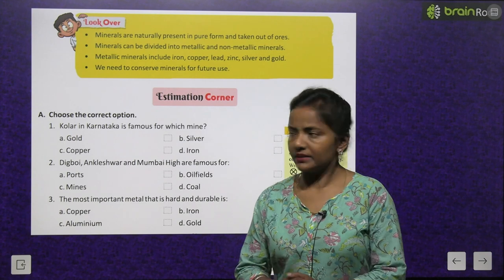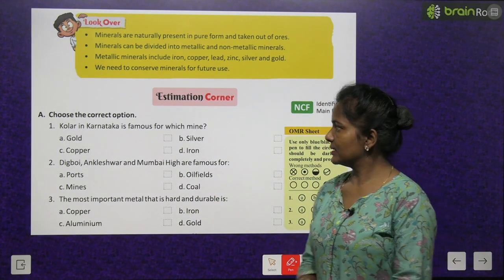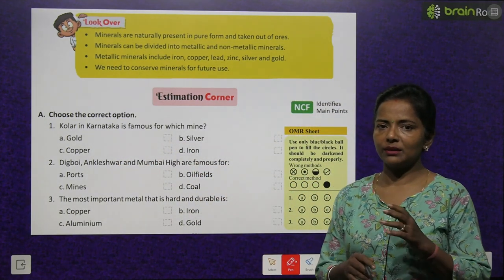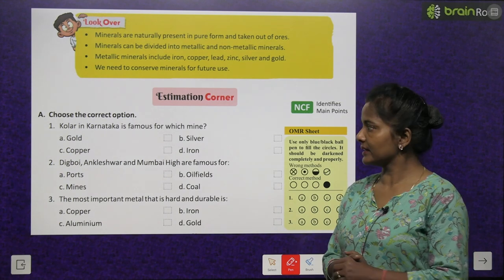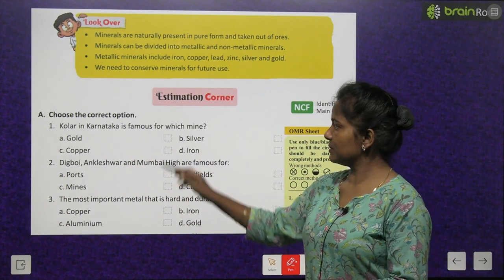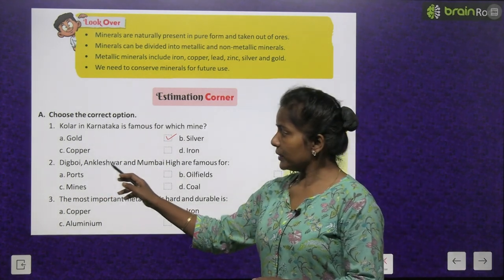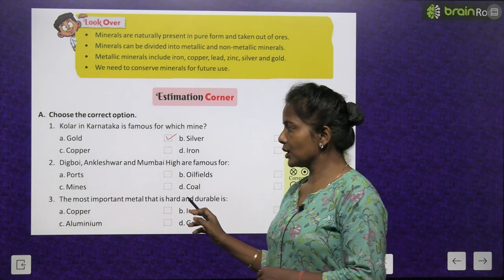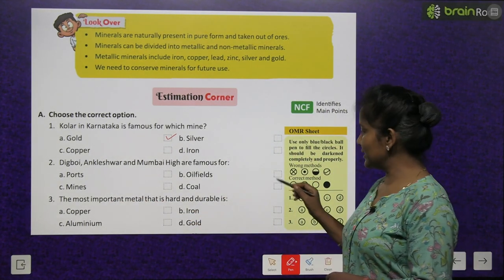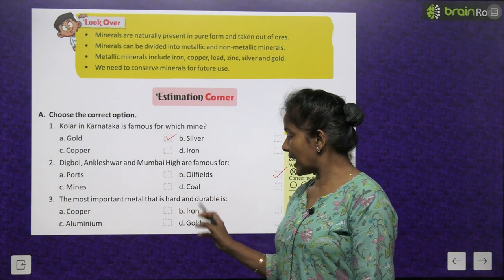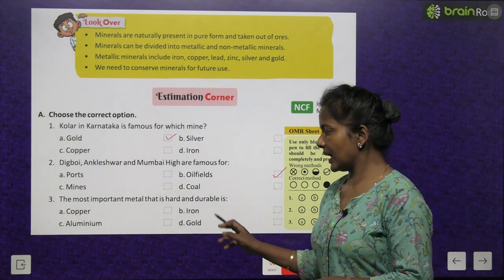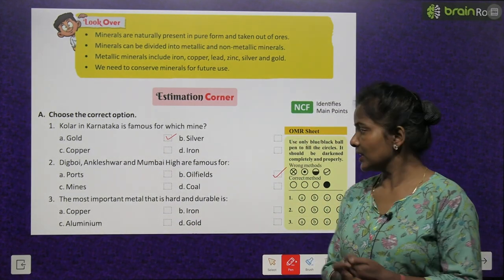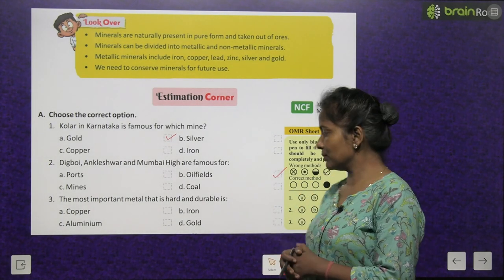Estimation corner — choose the correct option. Kolar in Karnataka is famous for which mine? It's famous for gold mine. Digboi, Ankleshwar and Mumbai High are famous for oil fields. The most important metal that is hard and durable is iron.